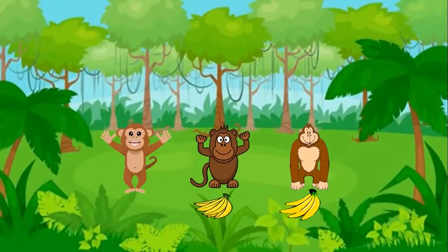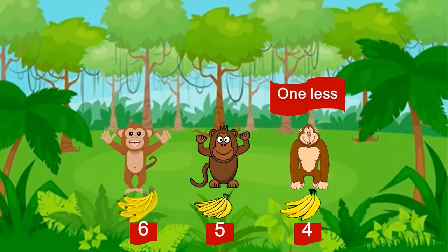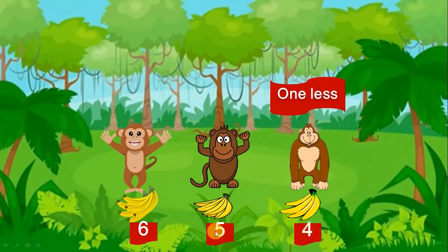This is the bananas. This is the 4 bananas. 5 bananas and 6 bananas. We have 3 different groups of bananas. Some of them are more than the others in the number. 1 less than 5 — because 5 is 5 bananas, but that one is 4. 4 bananas. We can say that 4 is 1 less than 5.